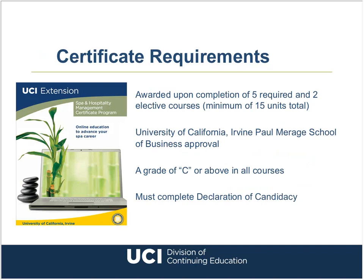The certificate program consists of five required courses and two electives — seven courses totaling 15 units. All courses have been approved by the Paul Mirage School of Business at UC Irvine. To be eligible for the certificate, students must complete all seven courses with a grade of C or better, plus a completed declaration of candidacy and request for certificate form. Since there is a small candidacy fee, I usually advise students to take a few classes first before applying.